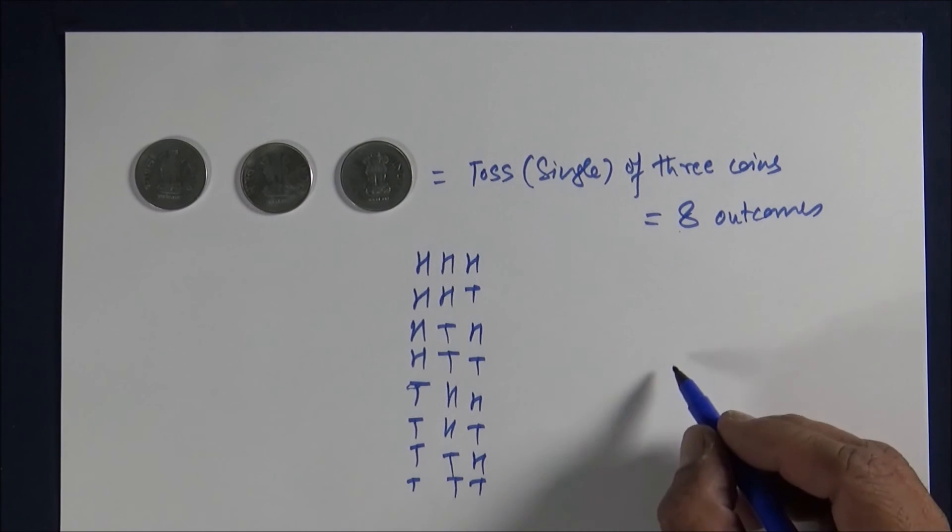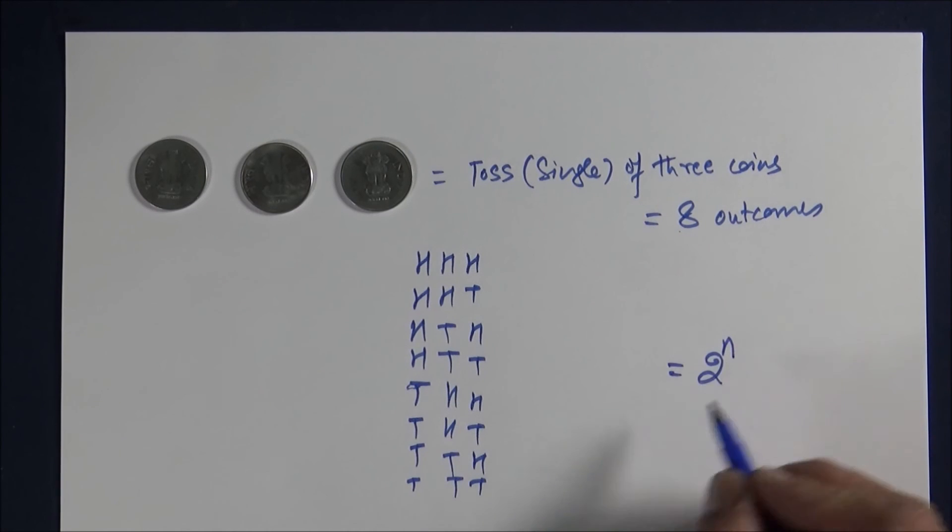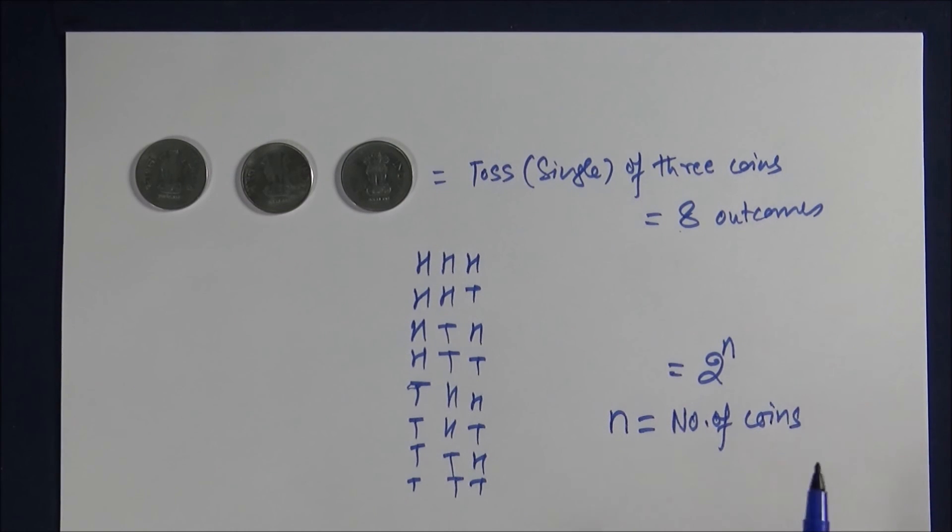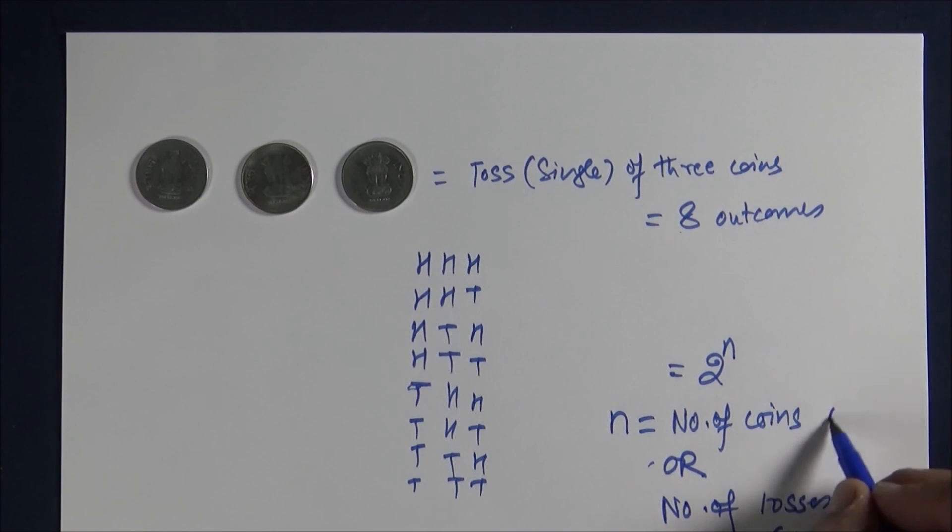So the formula becomes 2 raised to power n, and n is either the number of coins keeping the toss once, or it will be the number of tosses. When the coin is one, when you take coins, the toss will be a single toss. And when you take tosses, then there will be only one coin. So the sample space remains the same.